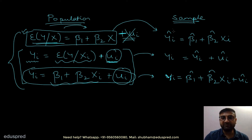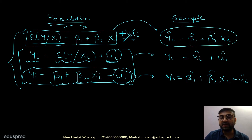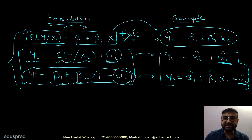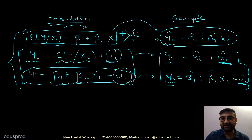Even on the sample side, pay attention to the first equation — this is the equation of the sample regression line, also called the sample regression function. When you write the equation of the sample regression line, you do not add the error term. The second and third equations do have an error term. The error term only comes in when the left-hand side is yi. The yi-hat equation does not have an error term, but the yi equation does.